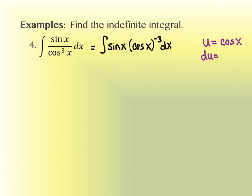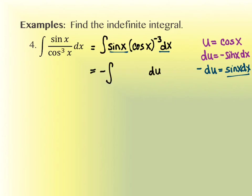So du would be negative sine of x dx. That's almost what I have — the difference is the negative sign. So I multiply the negative to the other side, meaning my replacement is that sine of x dx equals negative du. I end up getting a negative integral of u to the negative 3 du. If you had tried making the entire cosine of x to the negative 3rd as the u, the derivative would bring down a negative 4th power — that doesn't match what's in the problem, so that's why we don't choose that.